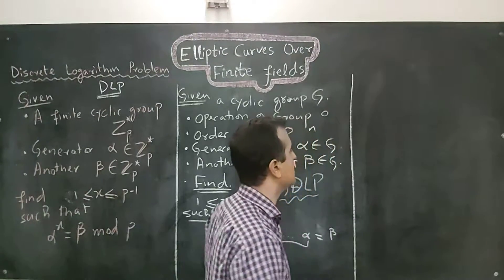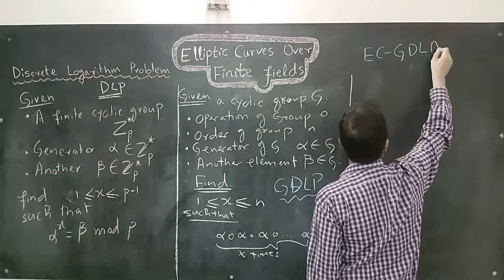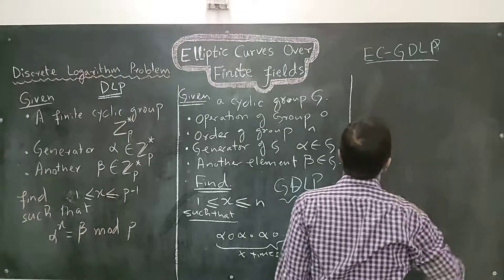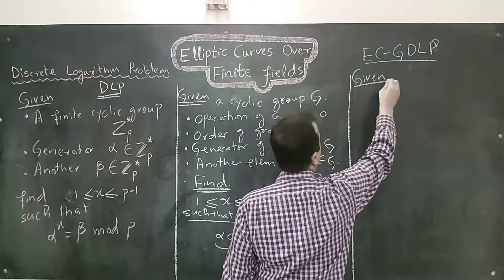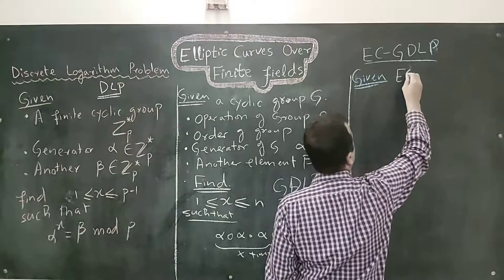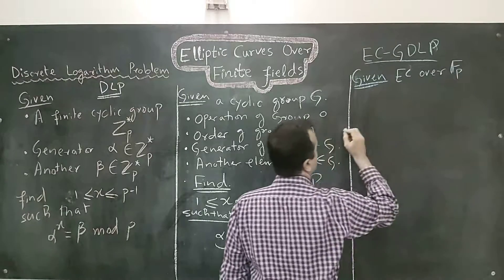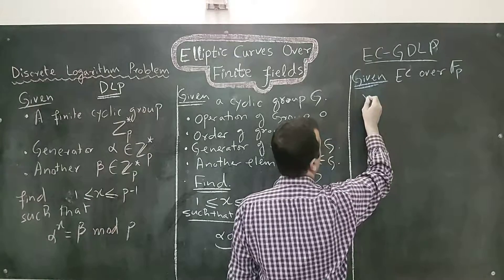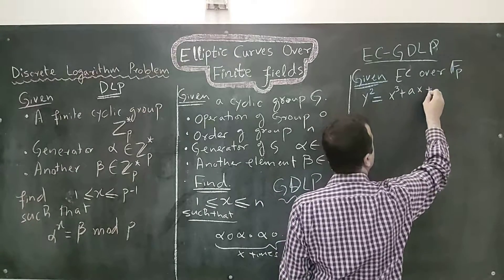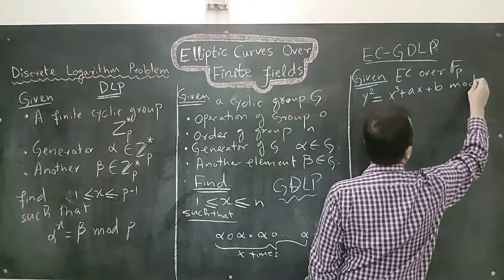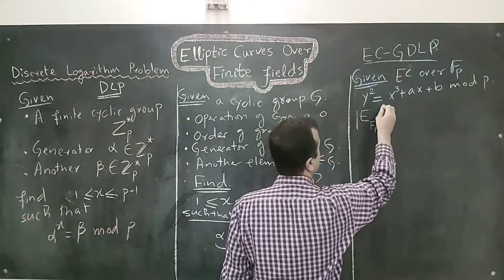And now, we have to define elliptic curve generalized discrete logarithm problem. In this case, we are given elliptic curve over finite field Fp. The equation of elliptic curve is y square equals x cube plus ax plus b. The cardinality of elliptic curve is n.